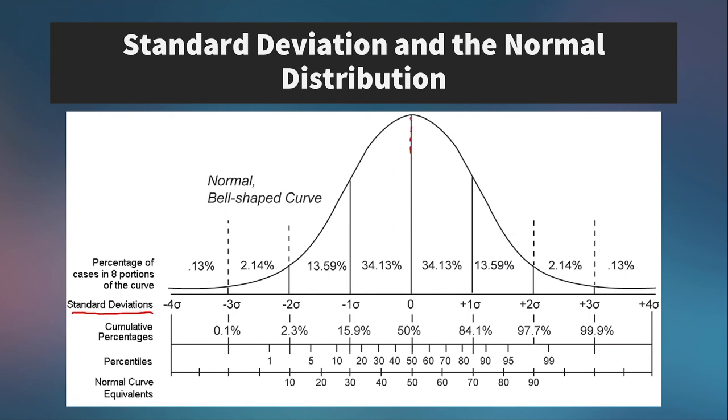Here, this midline, of course, is the mean and median and mode in this case, because it's a standard normal curve. And so if we go to the right of the curve, we have the first standard deviation here. And to the left, we have the first standard deviation there. And what we find is that actually 68% of all data falls within these two points.